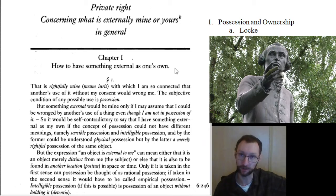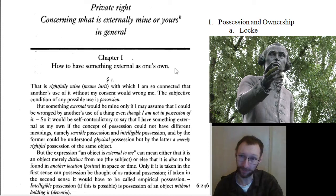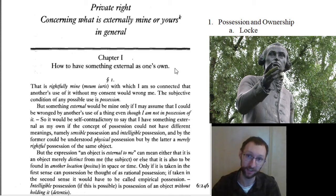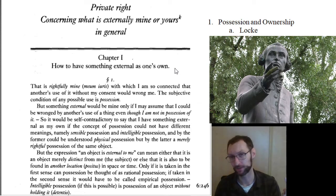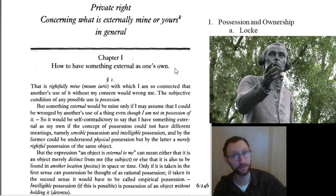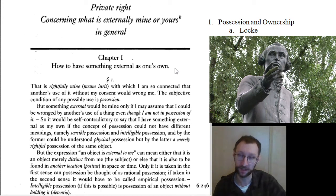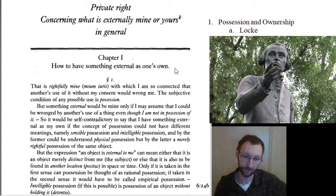First, the thing has to be unowned. I can't mix my labor with your stuff, because you already own that. It has to be unappropriated land or unappropriated property. If I pick up an apple that nobody grew, it belongs to me. But if I pick up an apple that you grew, it still belongs to you. Second, Locke thinks you have to leave enough and as good for others — you can't just take everything, and you can't leave them inferior stuff. I can't take all the good cropland and leave you only rocky land you can't farm. I can never take something if I don't leave enough and as good for you.